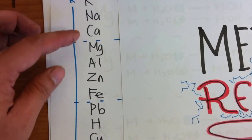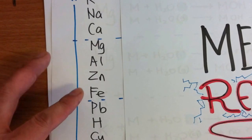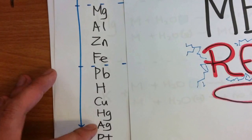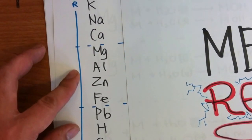So as we go down, we have potassium, sodium, calcium, magnesium, aluminum, zinc, iron, lead, hydrogen, copper, mercury, silver, platinum.